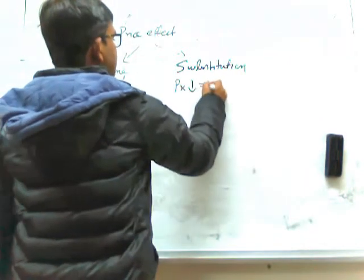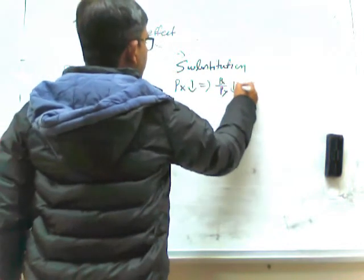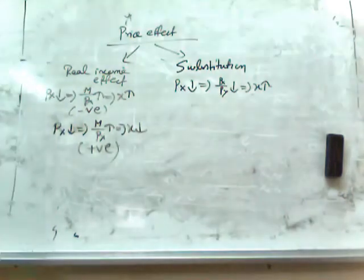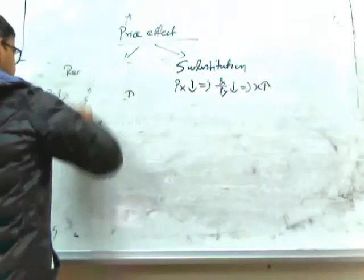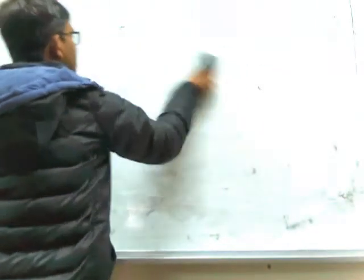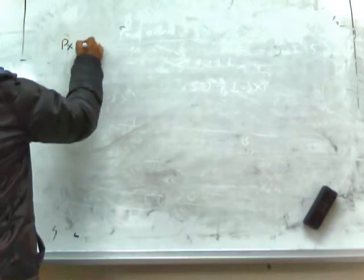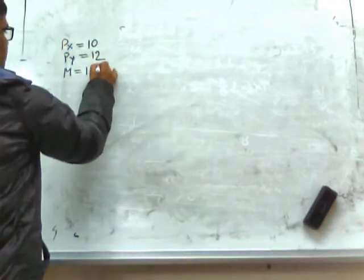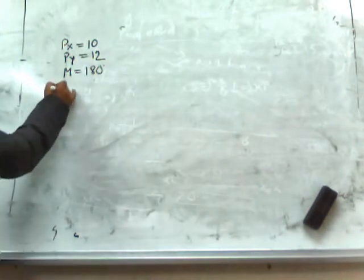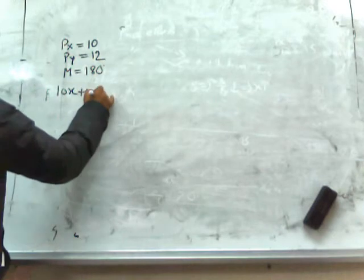If PX falls, then PX/PY will also decline and consequently the demand for X will rise. Now we will do it in the Slutsky method using some hypothetical numbers. For example, price of X equals 10, price of Y equals 12, and income of the consumer is 180. The budget equation will be 10X + 12Y = 180.